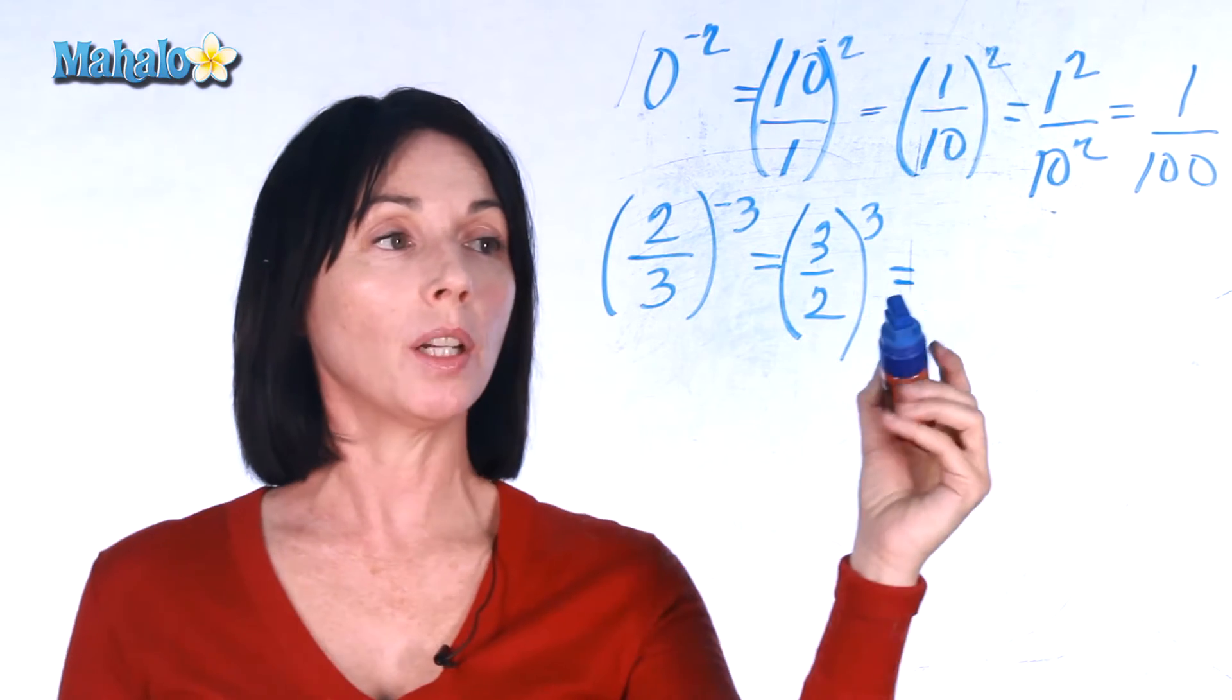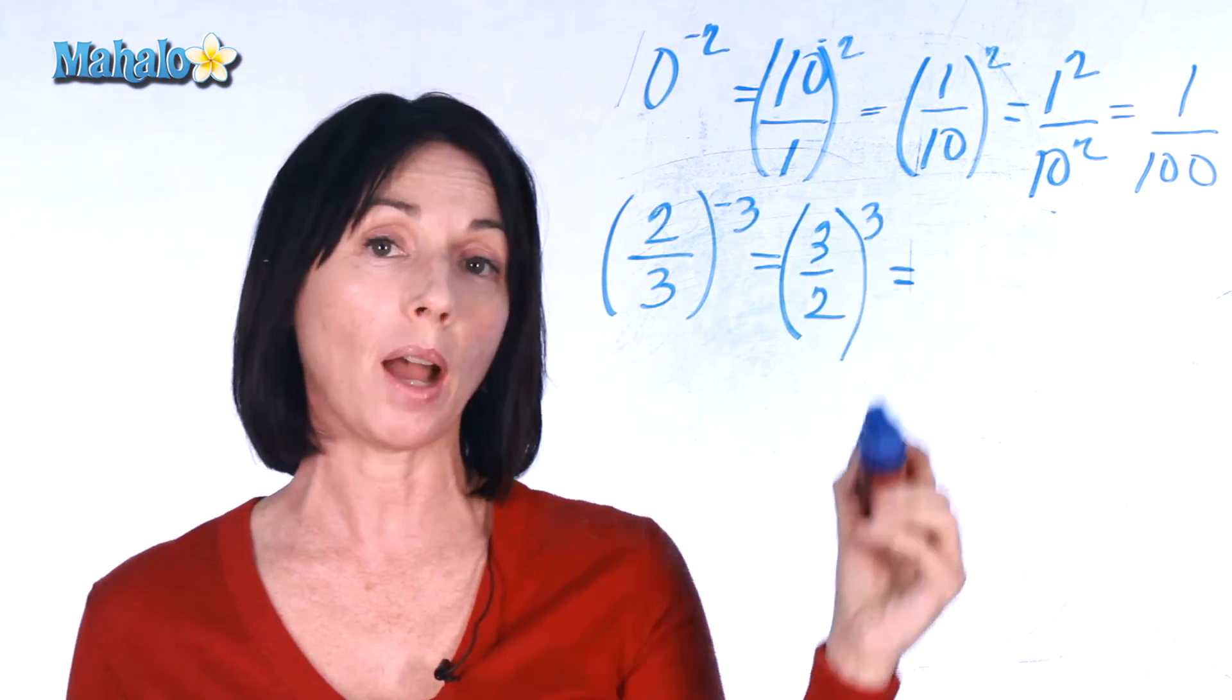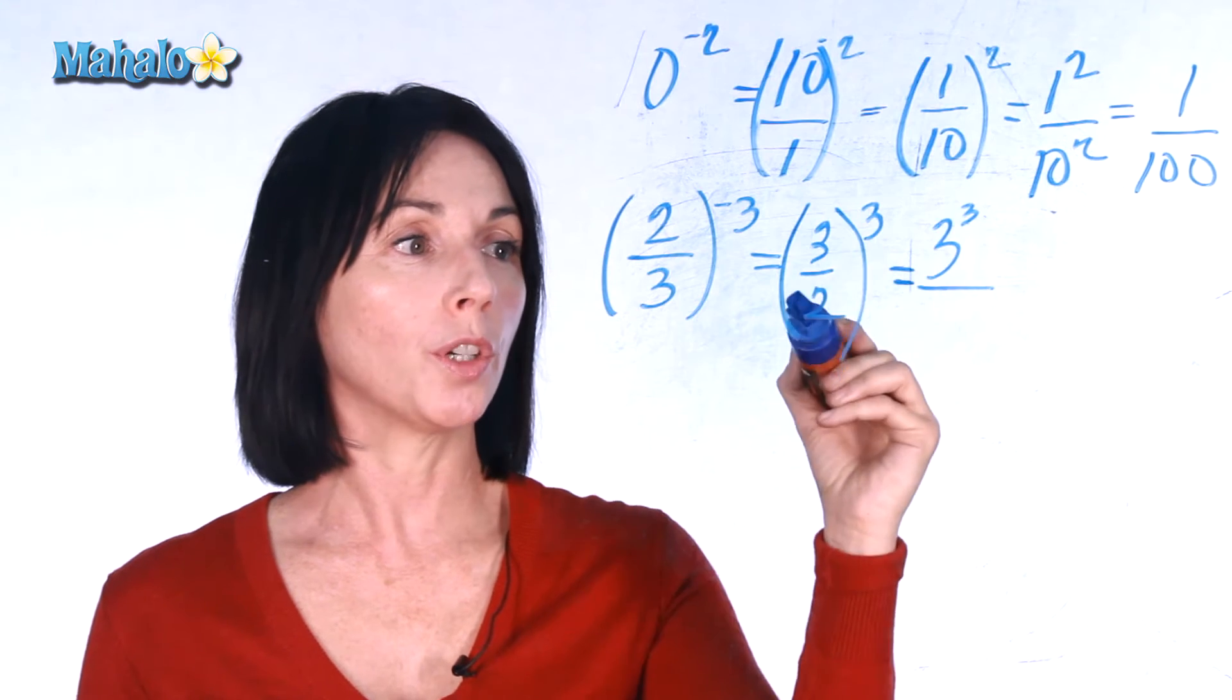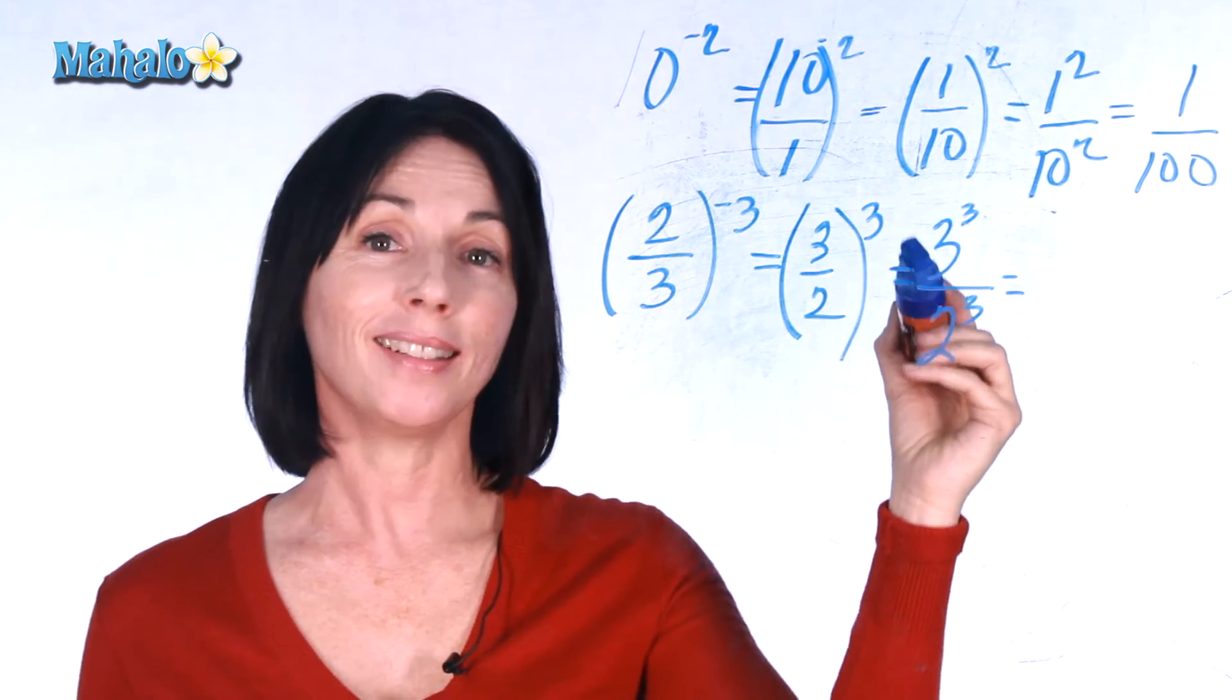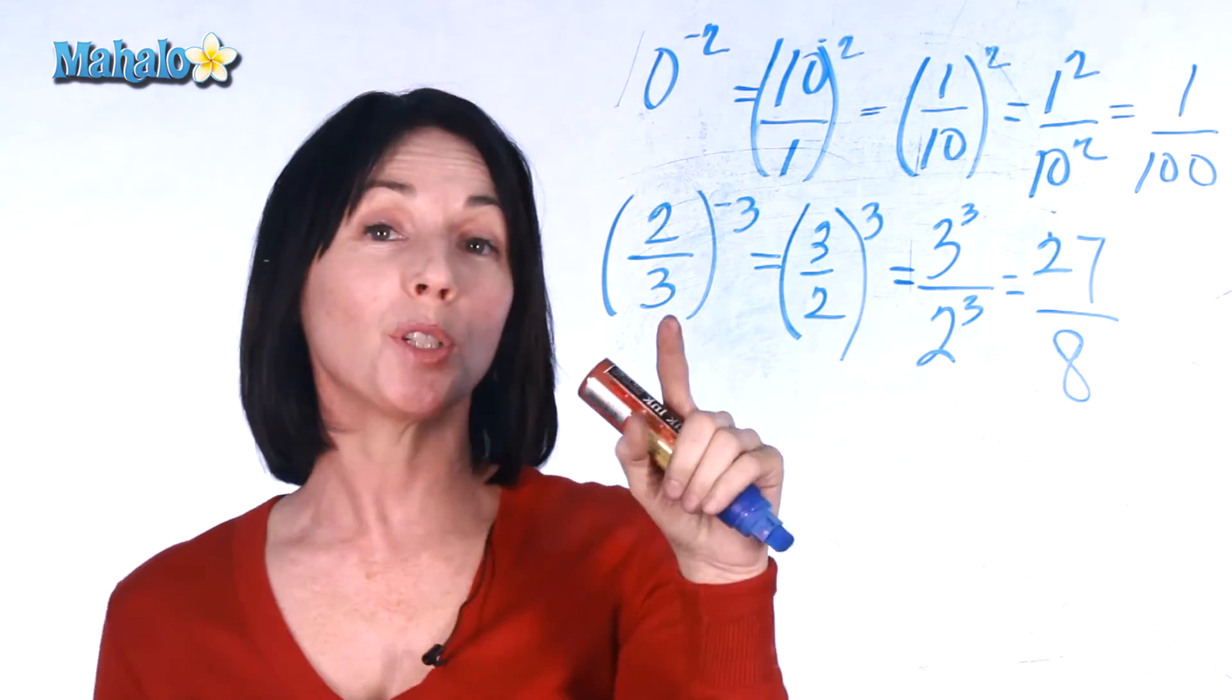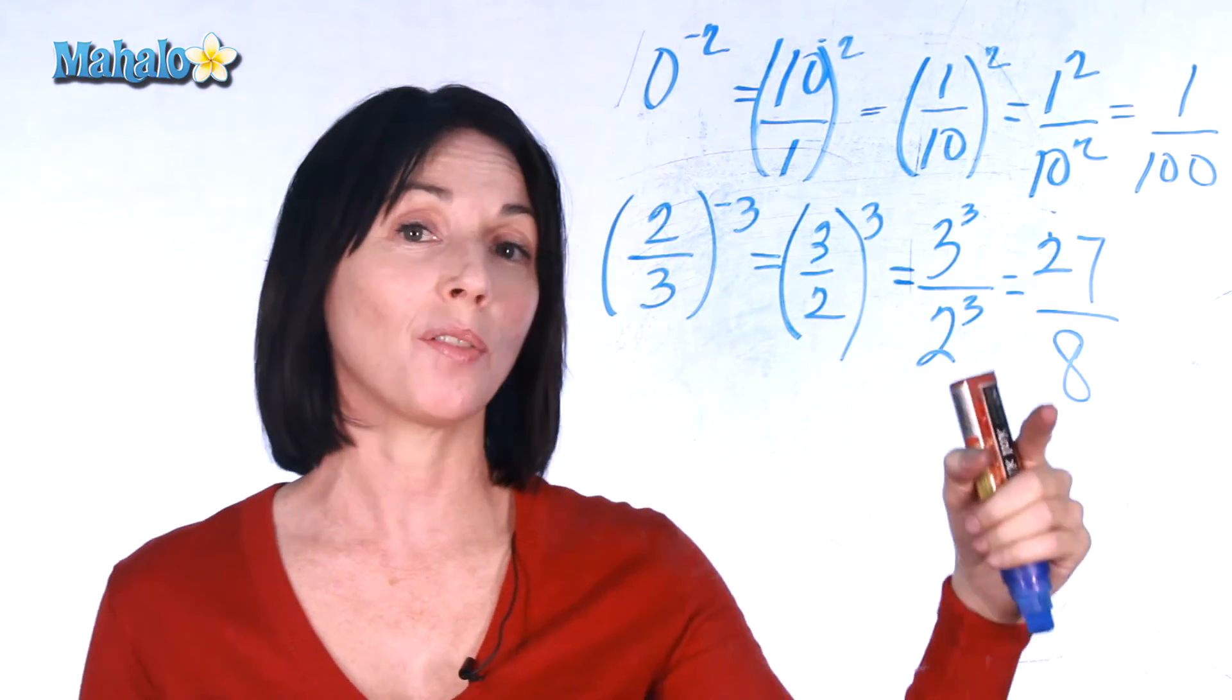Now just as we did up here, we can actually raise the numerator to the power and the denominator to the power separately and that's perfectly fine. So we actually have 3 cubed over 2 cubed. 3 times 3 times 3 is 27 and 2 times 2 times 2 is 8. So 2 thirds to the power of negative 3 is actually equal to 27 over 8.